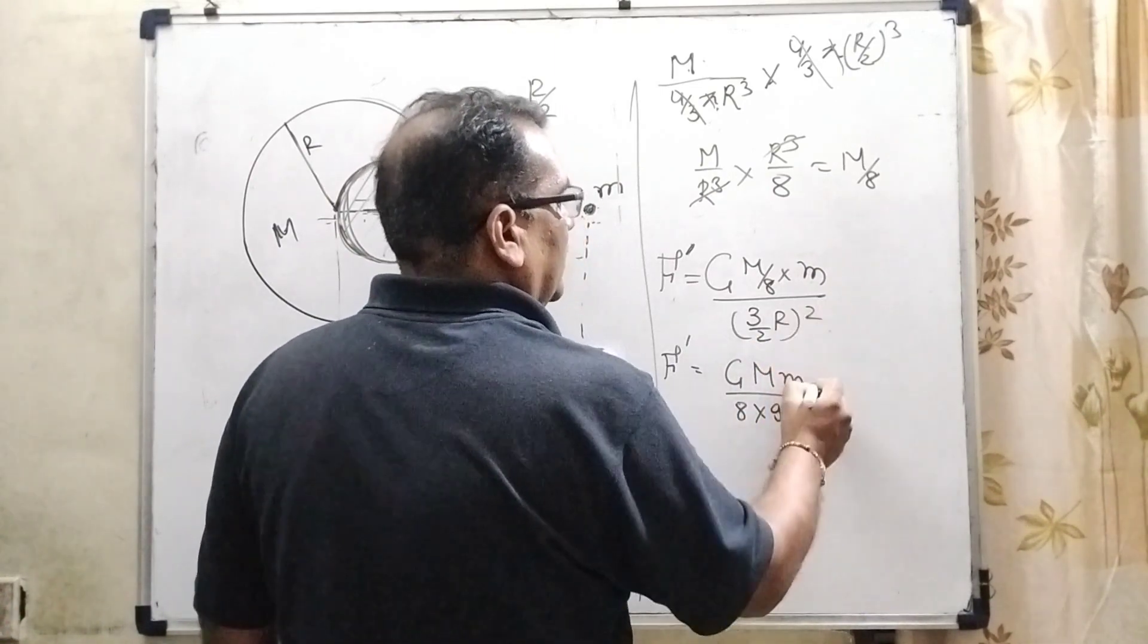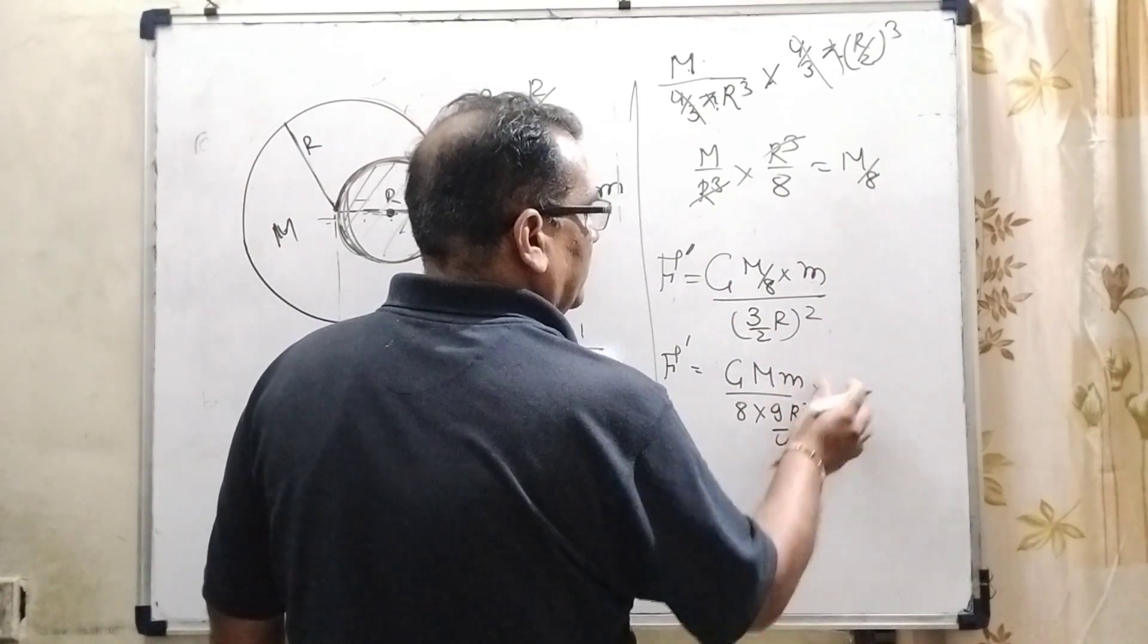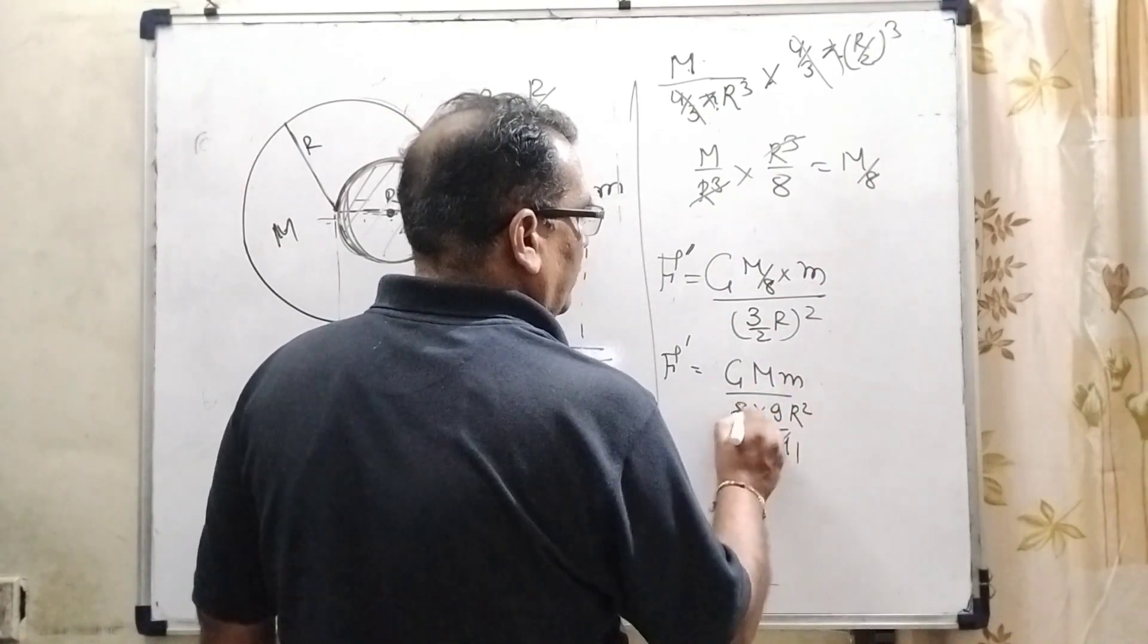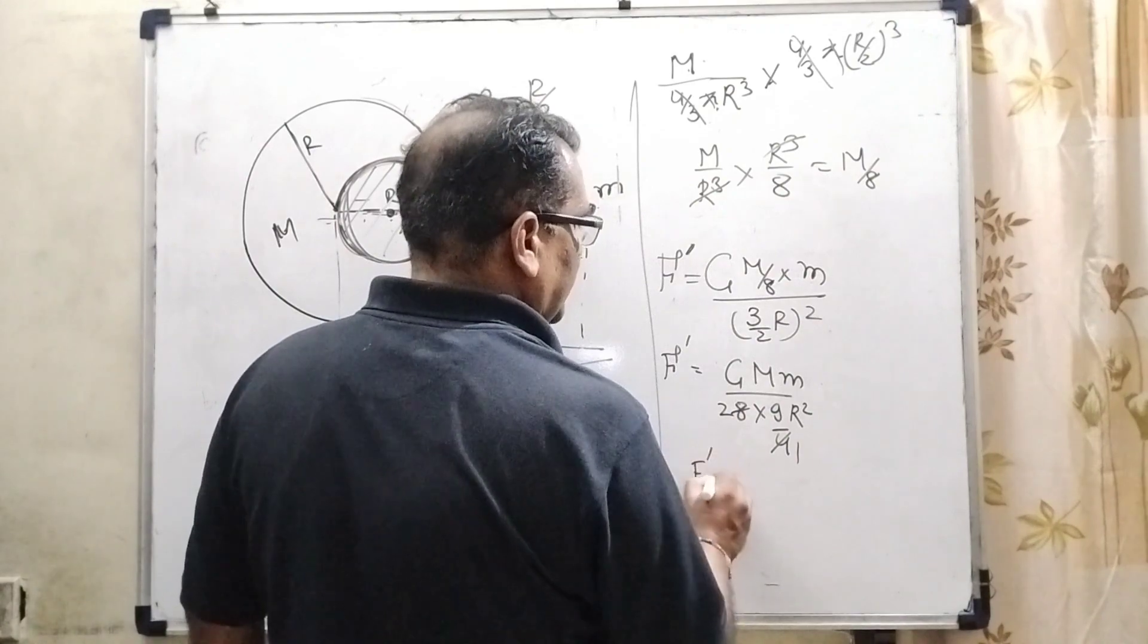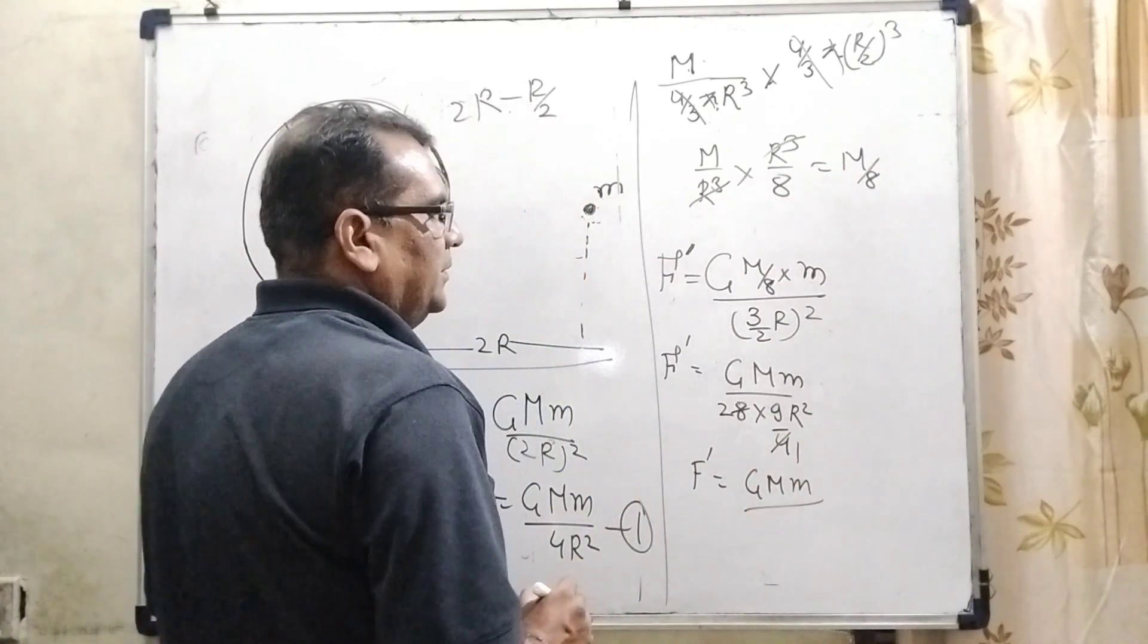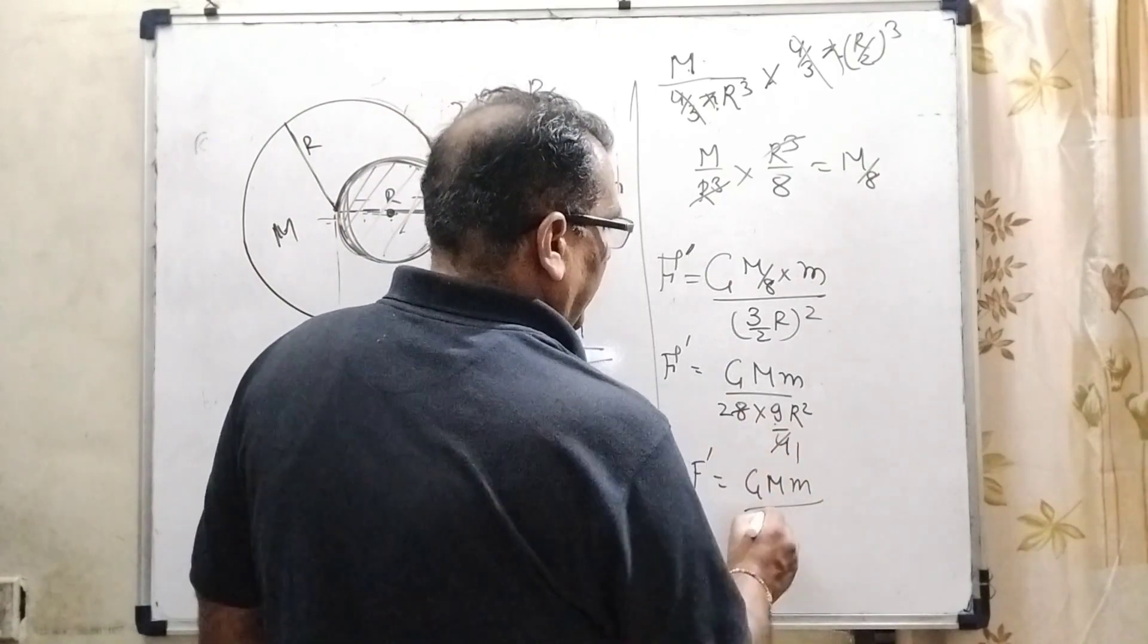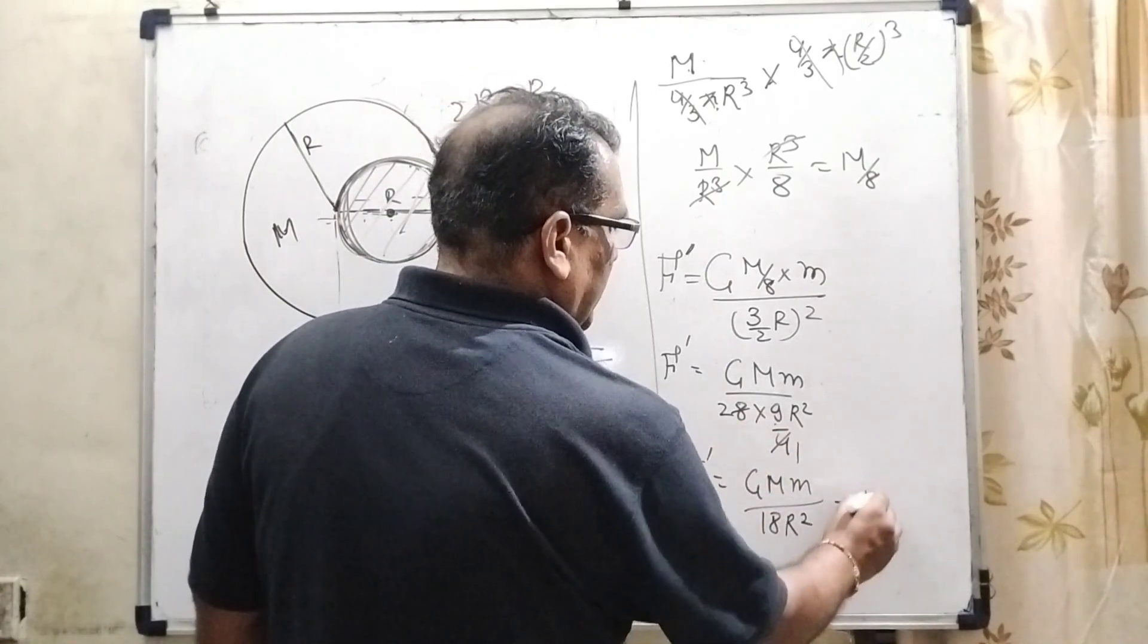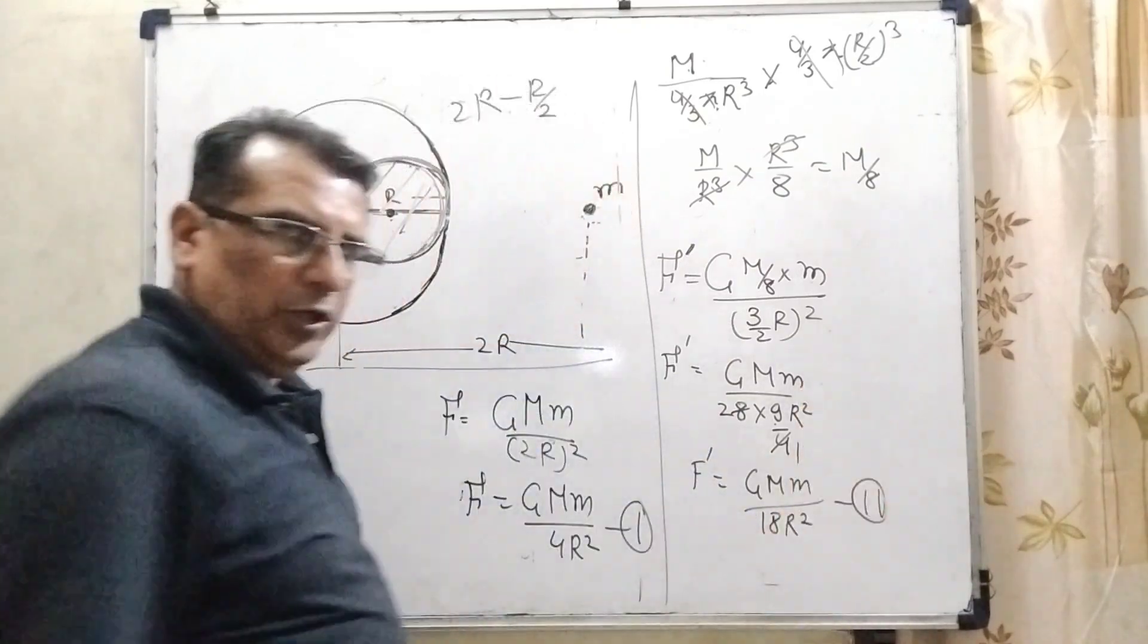Here 4. So 4 times 8. Then F dash equals G M small m divided by 9 into 18 R square. It is equation number second.